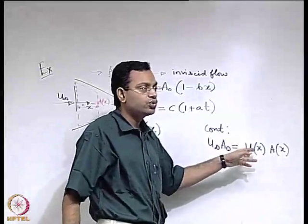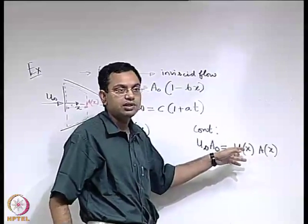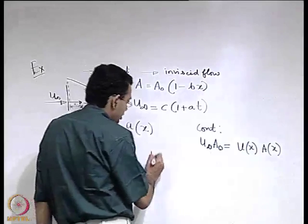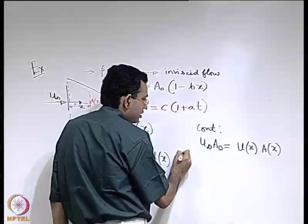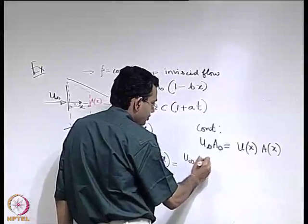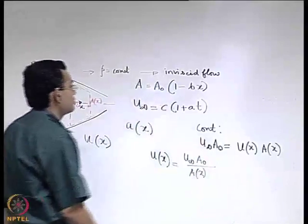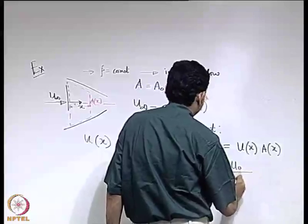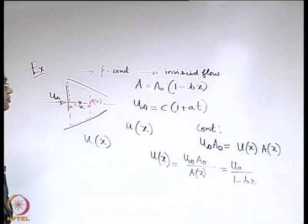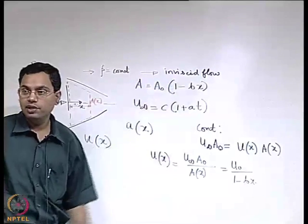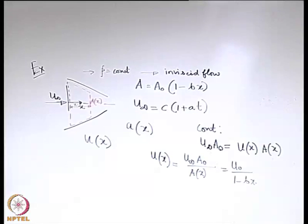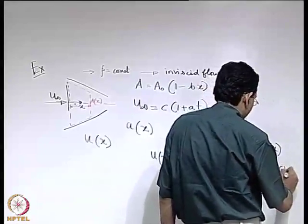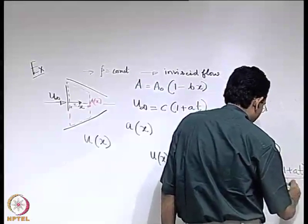Here u should ideally be the average velocity at the cross section, but because the flow is uniform it equals the centerline velocity. So u(x) equals u-infinity divided by (1 − bx), because A₀/A equals 1/(1 − bx). Since u-infinity is not a constant but a function of time, we get u(x, t) equals c(1 + at) divided by (1 − bx).